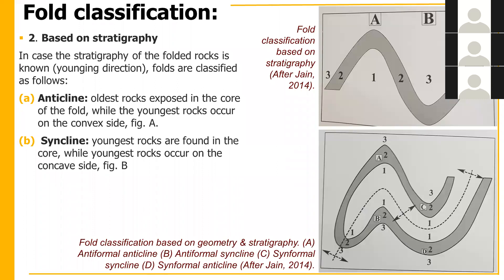Anticline definition: oldest rocks are exposed in the core of the fold, while youngest rocks occur on the convex sides. In figure A, bed number 1 is at the core and bed number 3 is on the convex side — oldest in the core, youngest outside. So this particular example is an anticline.